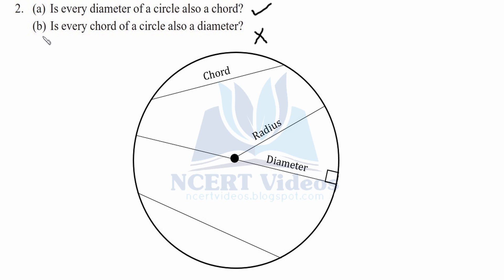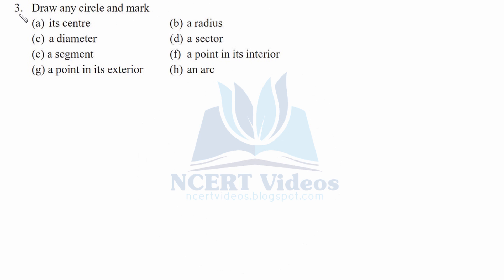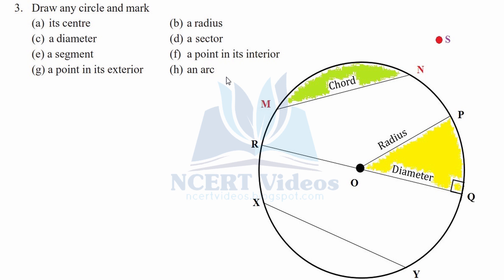Question three: draw any circle and mark its center, a radius, a diameter, a sector, a segment, a point in its interior, a point in its exterior, and an arc. Here we have the circle with center O — that is part A. The radius is OP, so OP is the radius — that is your B part.